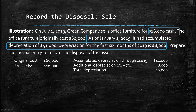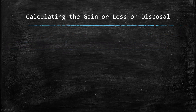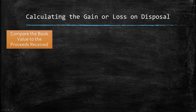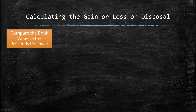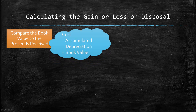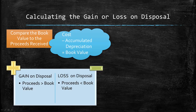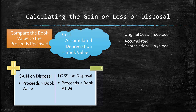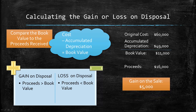Now that we've identified the cost, total depreciation, and proceeds, we need to calculate the gain or loss. When calculating the gain or loss, you compare the book value of the asset to the proceeds received. Book value is the cost of the asset minus accumulated depreciation. If proceeds are more than book value, you record a gain; if less, it's a loss. For the office furniture, cost was $60,000 minus $49,000 accumulated depreciation gives a book value of $11,000. Since proceeds were $16,000, we end up with a $5,000 gain on the sale.